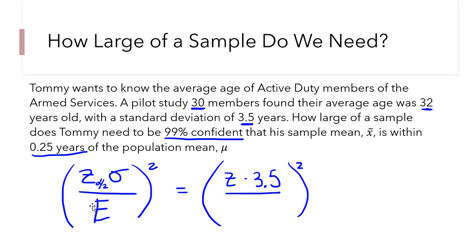Alright, what about e? What is e? e is the margin of error, right? Let's see. Tommy wants to be 99% confident that his sample mean is within 0.25 years. Okay, so that is the margin of error. How close to the population mean are you willing to accept some error? Alright, so this is the margin of error, 0.25 is e. So let's plug that into the denominator, 0.25.